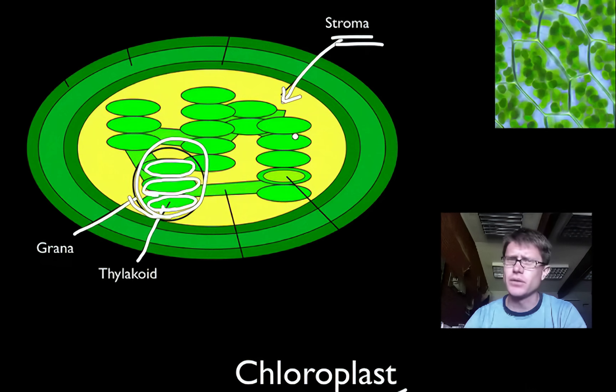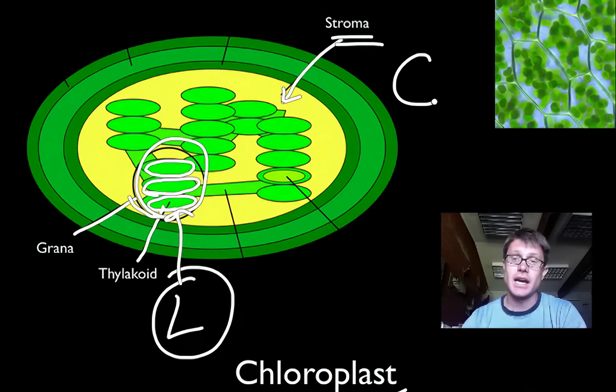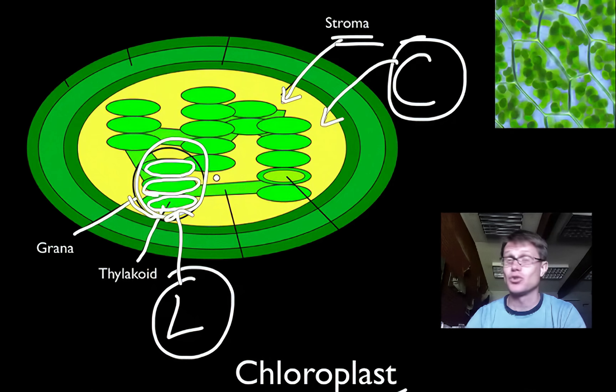And so again, going back over photosynthesis, the light reaction is going to take place on that thylakoid membrane. And then that Calvin cycle is going to take place in the stroma. And so the reason we have increased surface area is to absorb more light because the chlorophyll molecules, remember, will sit right in the thylakoid membrane. But we're also increasing chemical reactions.